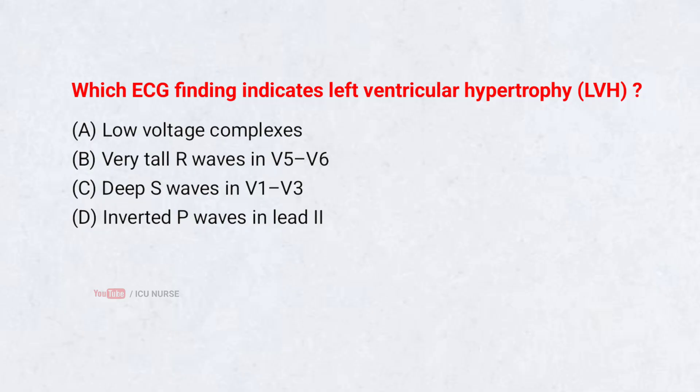Which ECG finding indicates left ventricular hypertrophy (LVH)? A. Low voltage complexes, B. Very tall R-waves in V5, V6, C. Deep S-waves in V1, V3, D. Inverted P-waves in Lead 2. Correct answer: B. Very tall R-waves in V5, V6.